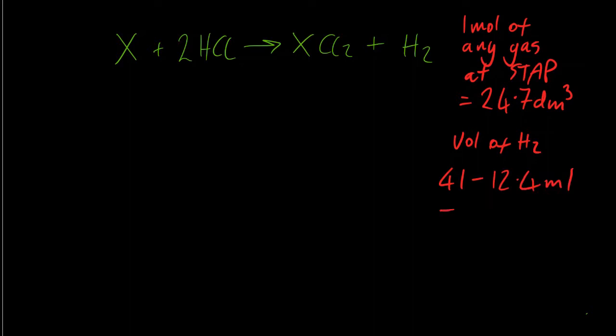Following the decimal places rule, that comes out at 29 milliliters. Divide by 1,000 to get it into decimetres cubed, and that's the volume of hydrogen that I made.